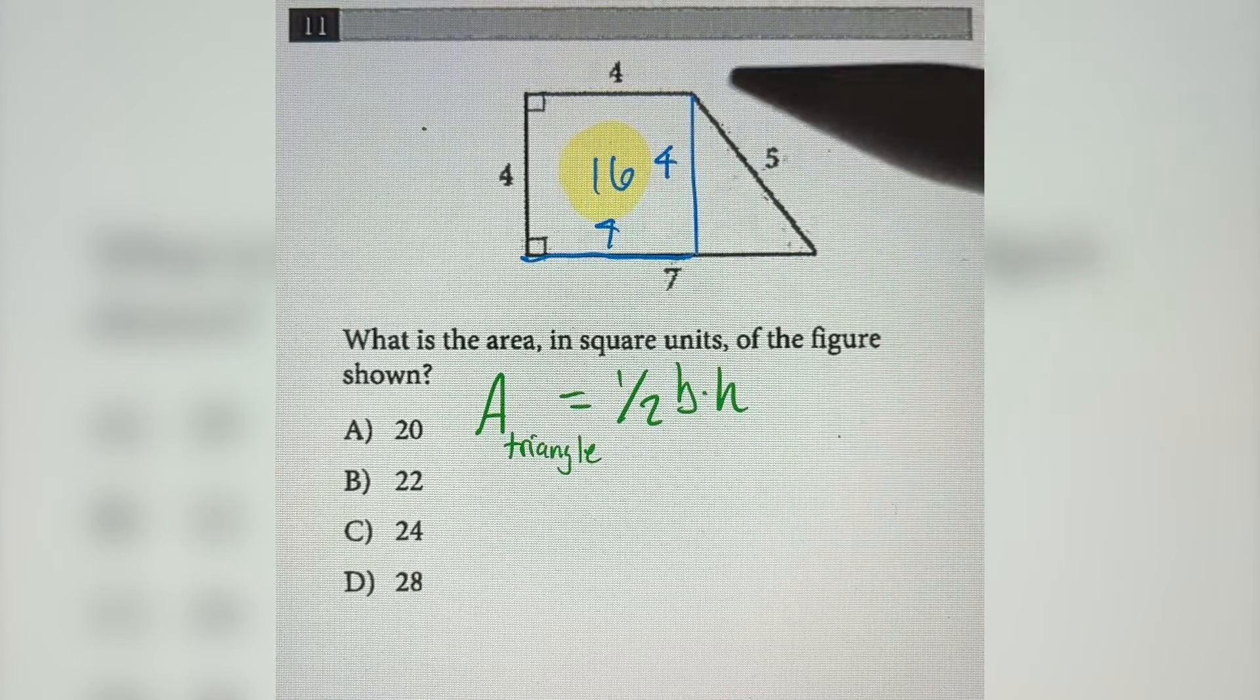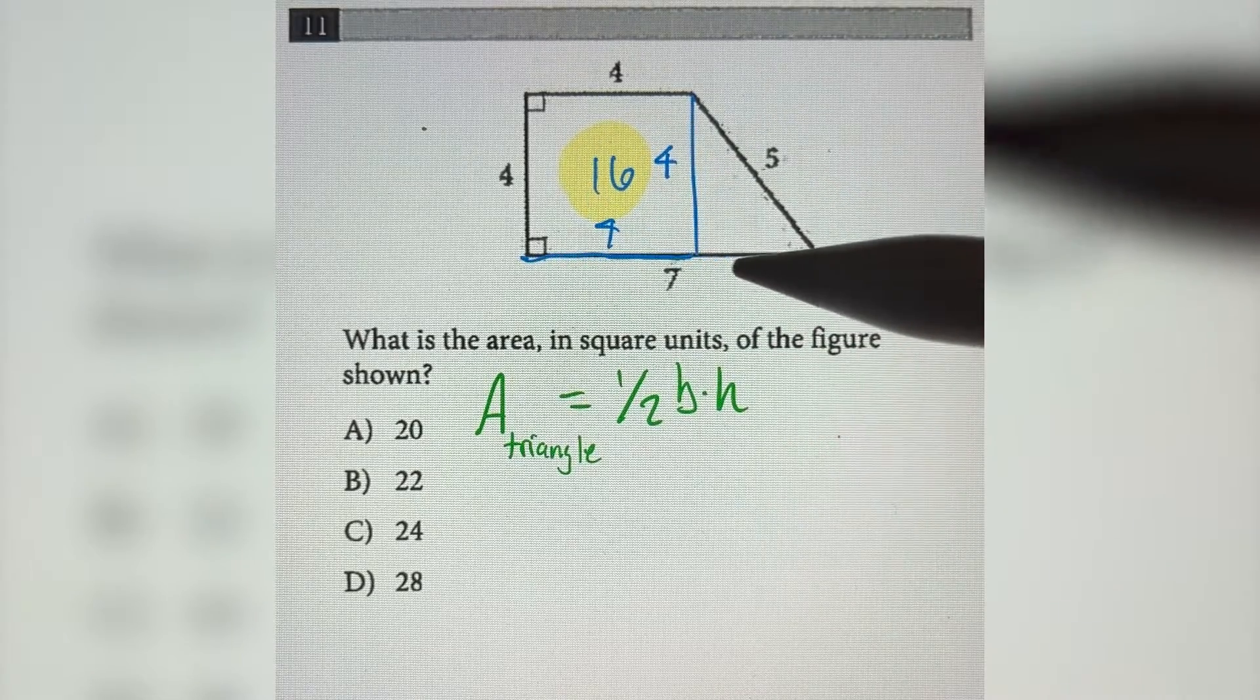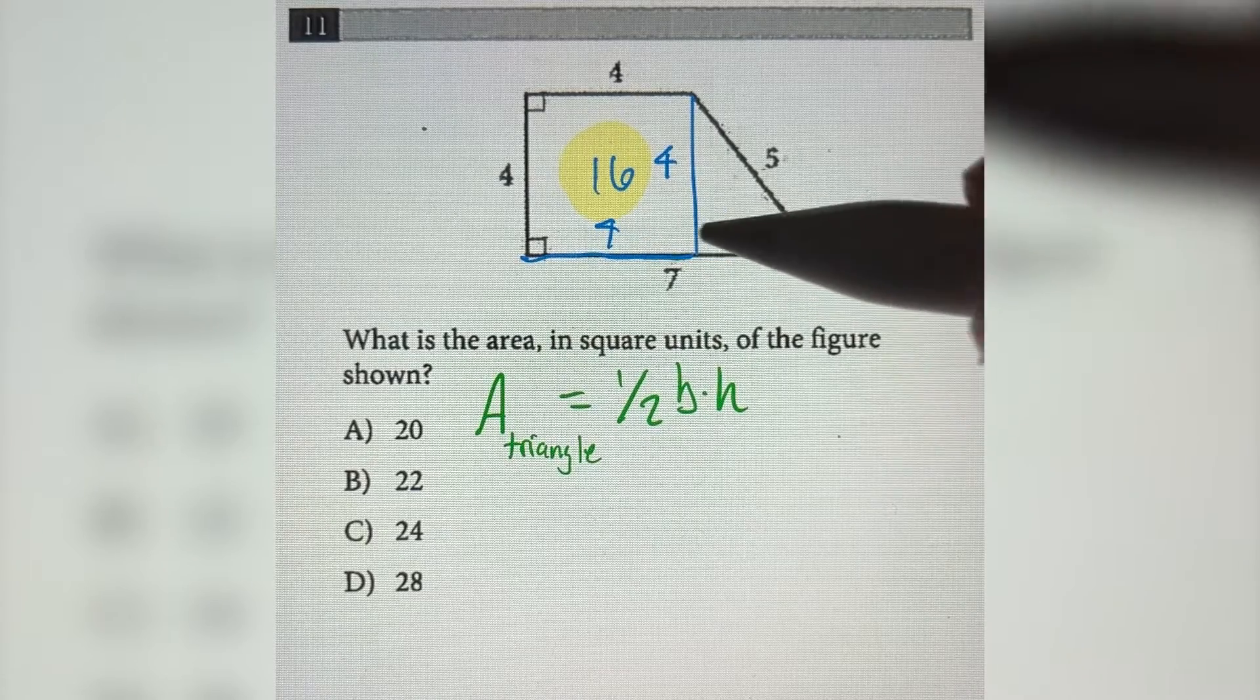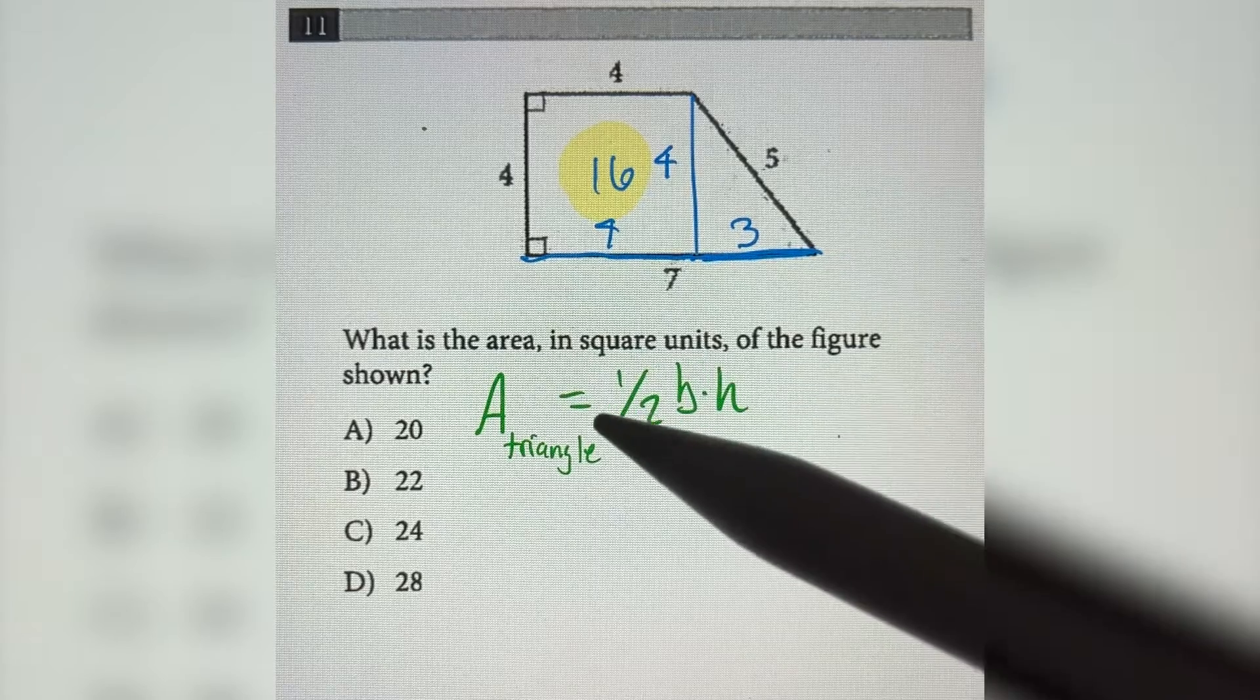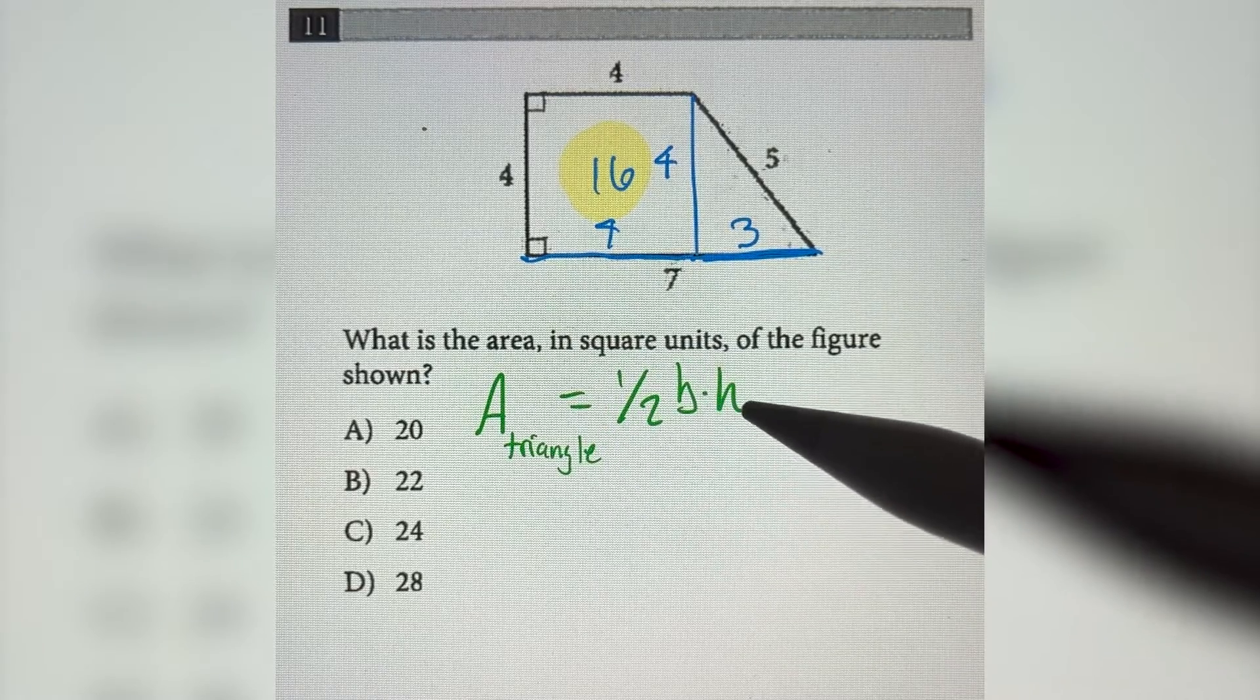So now let's move on to the triangle. So since this whole entire side length is equal to 7, and we have 4 of it over here, that means that there's 3 left over for this side length. And we also know that the area of a triangle is 1 half base times height.